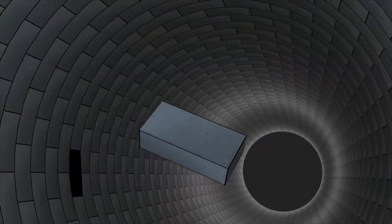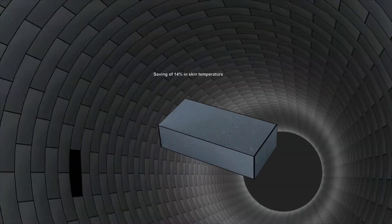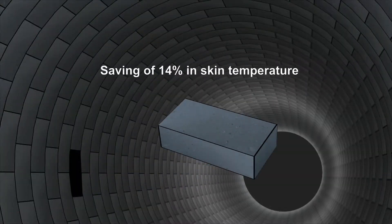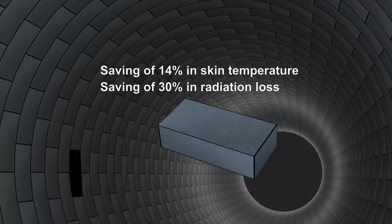Thus, using mullite based castables in place of low cement castables can lead to a saving of 14 percent in the skin temperature and around 30 percent savings in radiation heat loss from the surface.